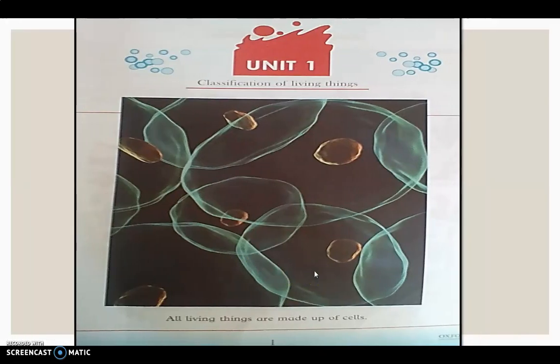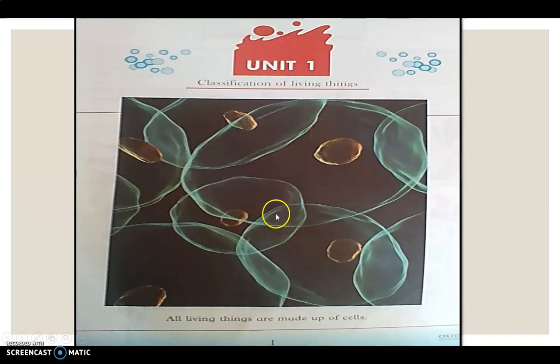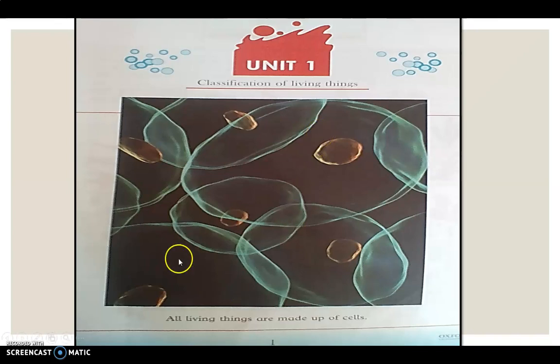This is Unit Number 1: Classification of Living Things. I have already told you about classification and about living things. The basic difference between living things and non-living things is that living things can breathe and non-living things do not breathe.